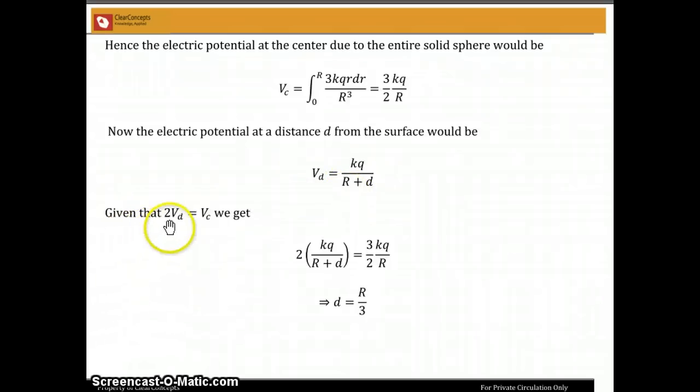So now given that 2Vd equals Vc, we're told that the potential at d is half the potential at c. So that means twice the potential at d is equal to the potential at c. Plugging in the values we've got, we get d equals R by 3.